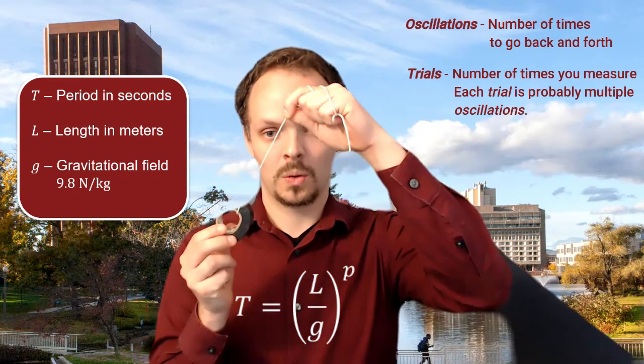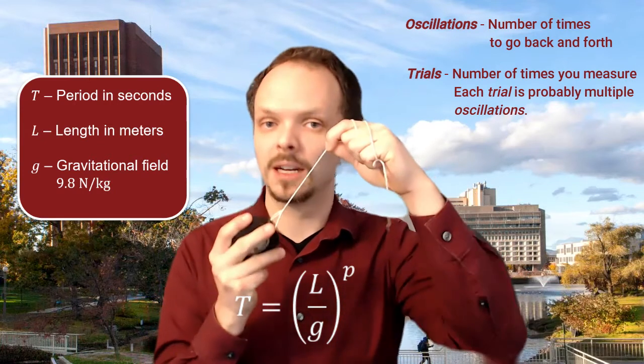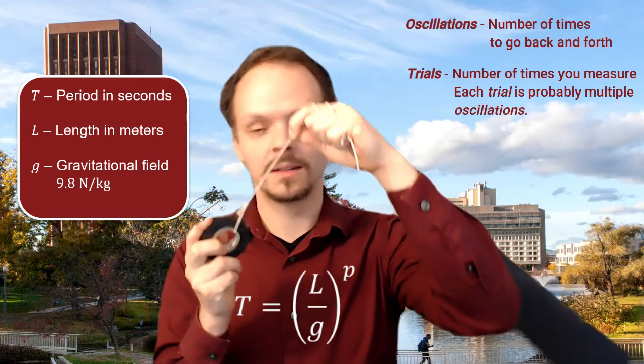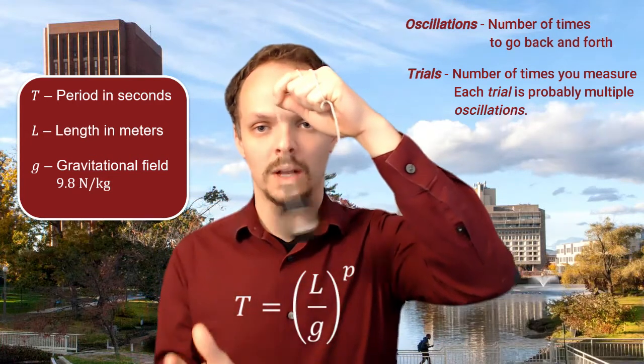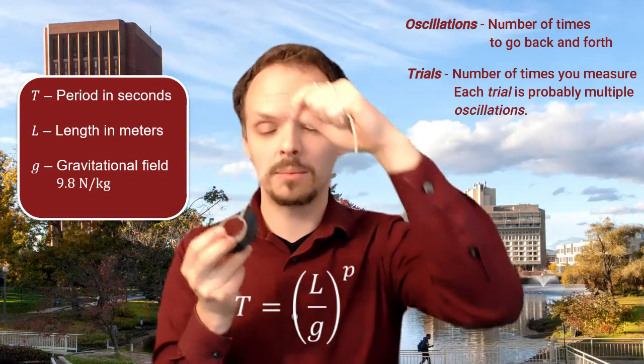So 1, 2, 3, 4, 5 - get a period from those data. Second trial: 1, 2, 3, 4, 5 - that would give you a second period.